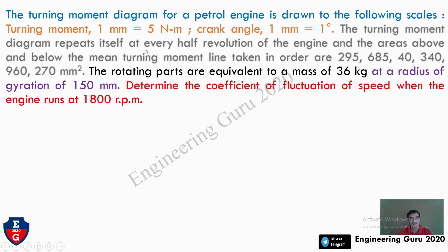The turning moment diagram repeats itself at every half revolution of the engine. The areas above and below the mean turning moment line, taken in order, are: 295, 685, 40, 340, 960, and 270 mm². The values above the mean line are positive and below are negative, alternating accordingly.